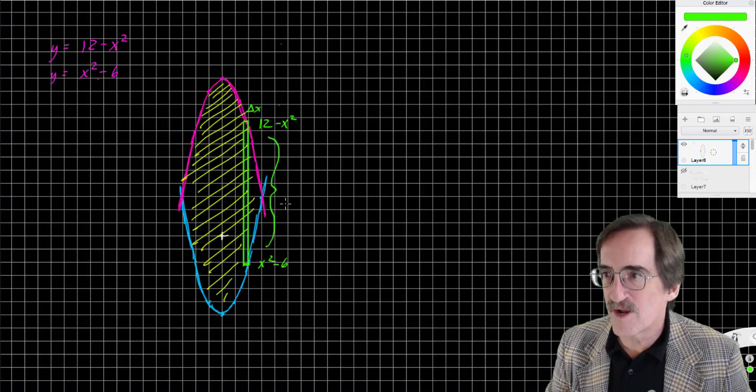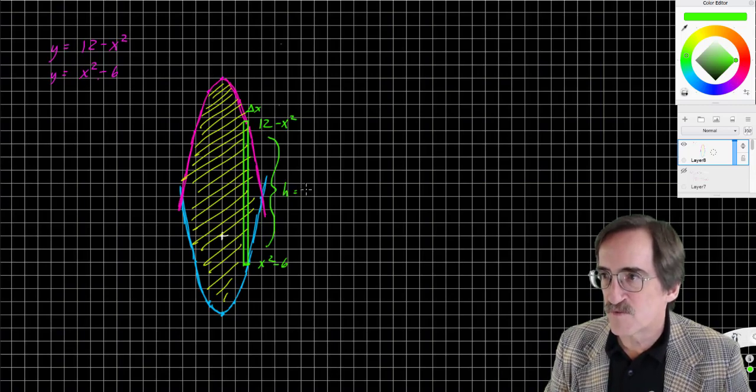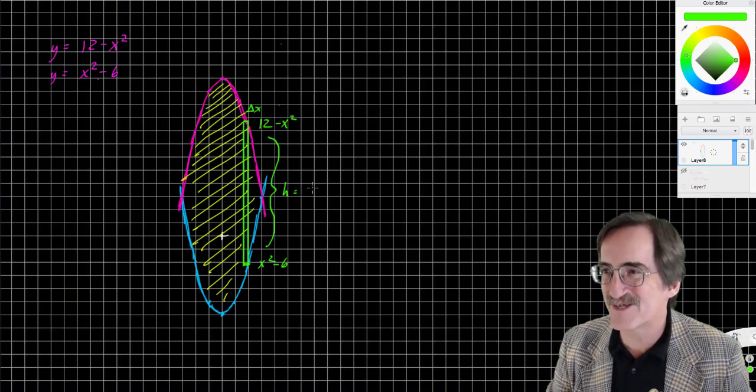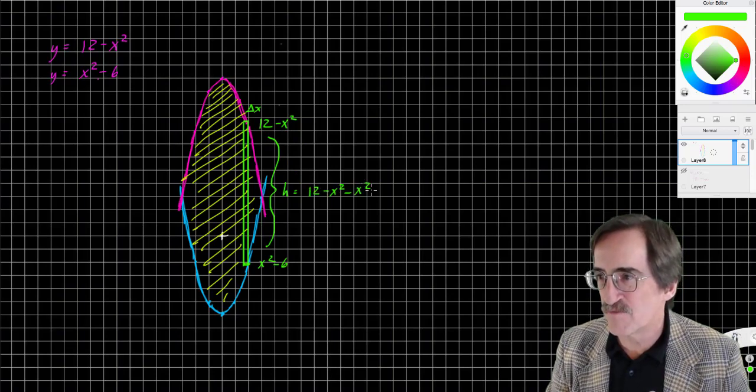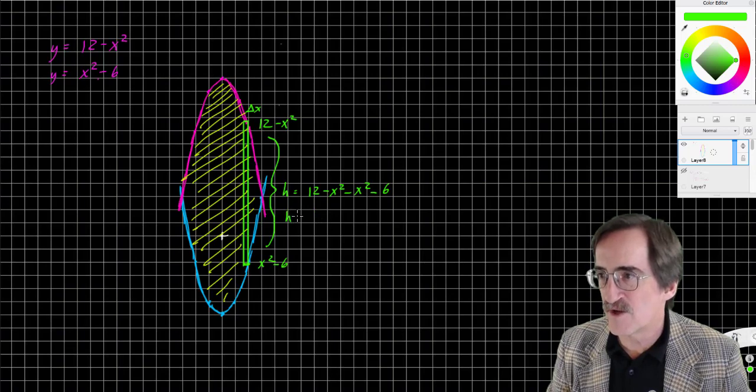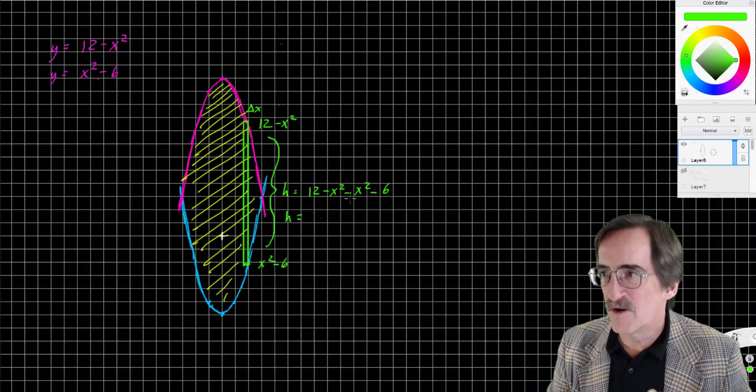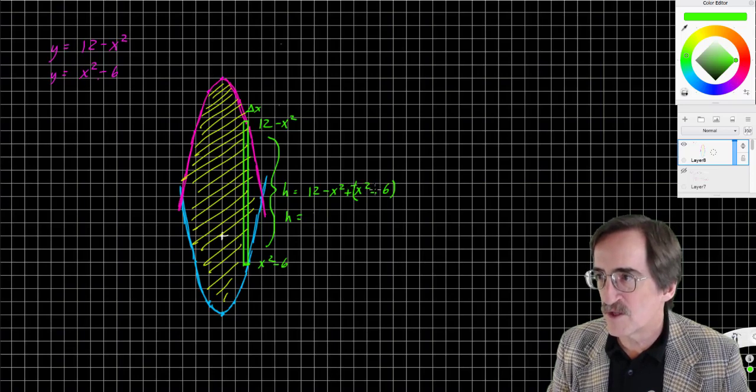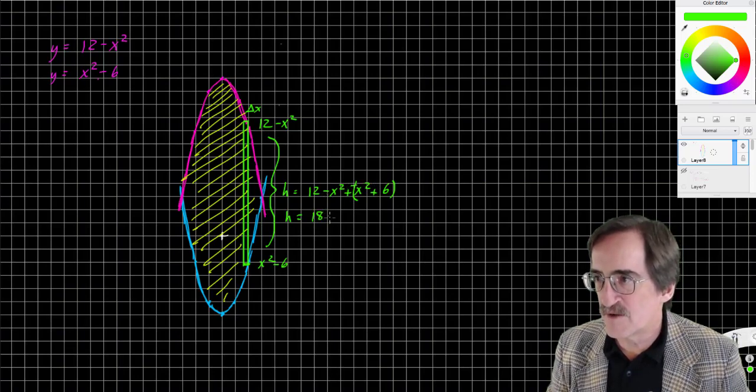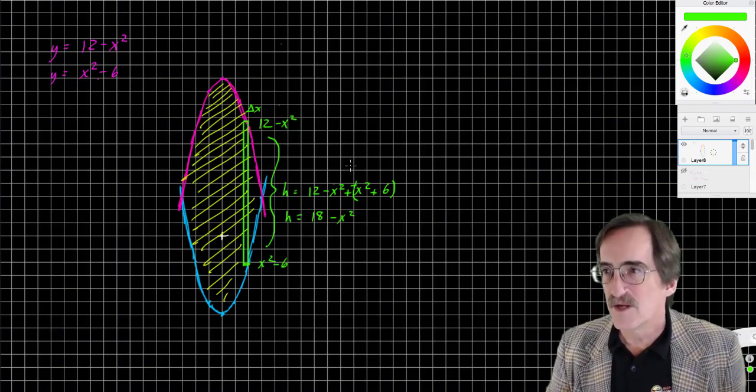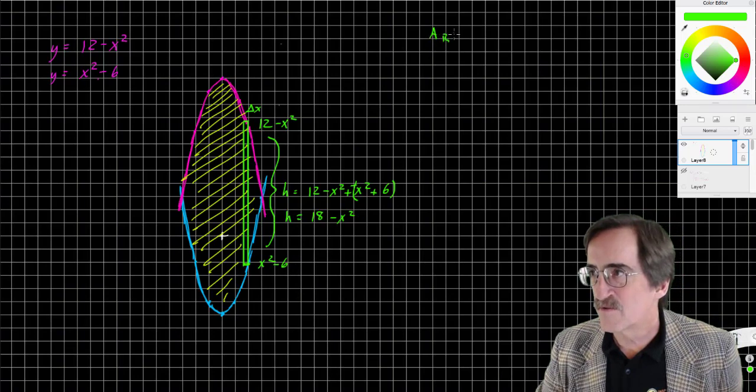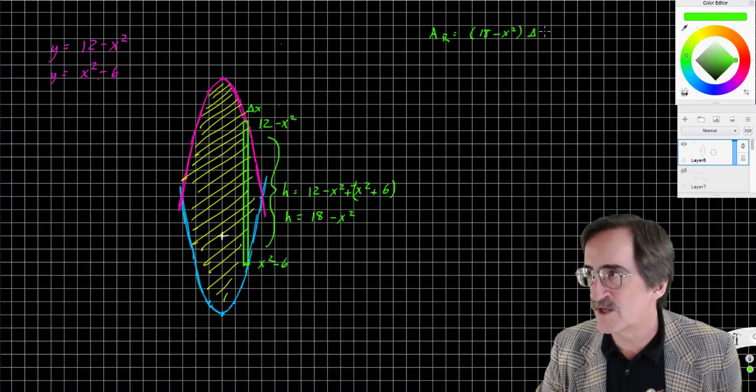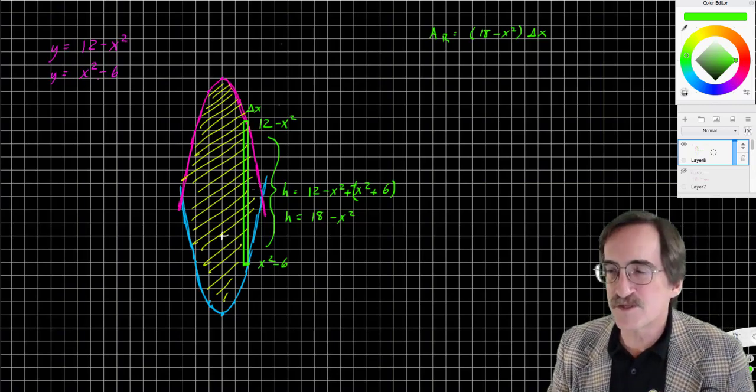The height of this slice is 12 minus x squared. The depth of the blue slice, or the coordinate of the bottom, is x squared minus 6. So the height of the rectangle is length times width. The height of the rectangle is 12 minus x squared minus (x squared minus 6). Let's simplify that. That's going to be minus x squared plus 6, so that's 18 minus 2x squared. That's the height of my rectangle. So the area of the rectangle is 18 minus 2x squared times the width delta x. This is expressing the area of just the vertical thin slice.